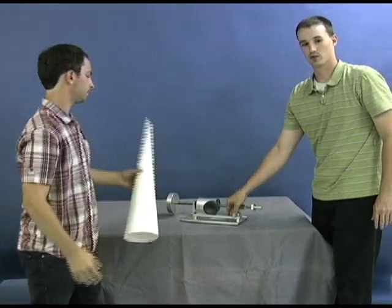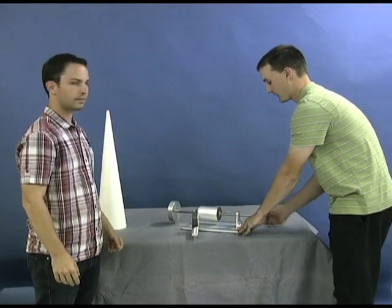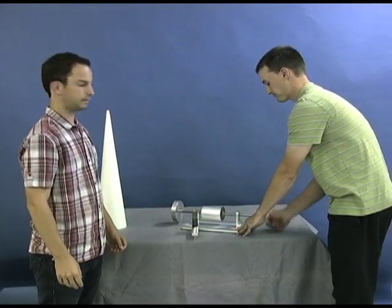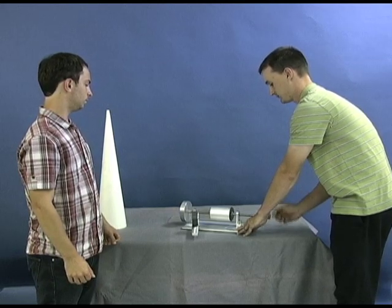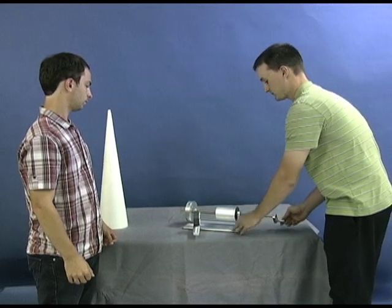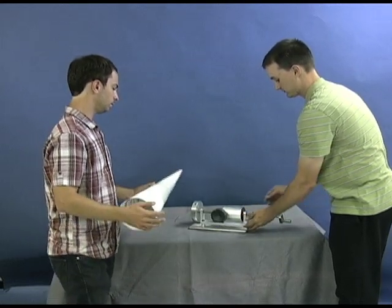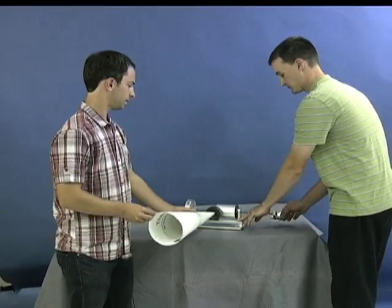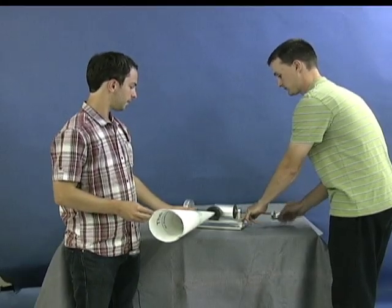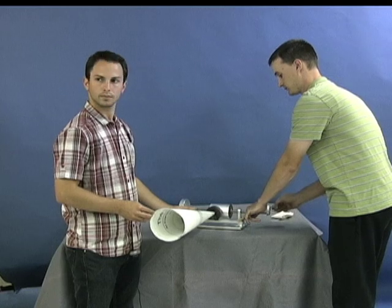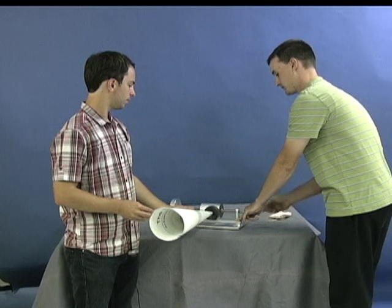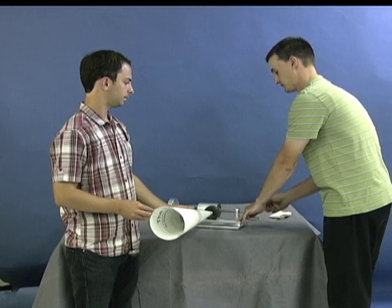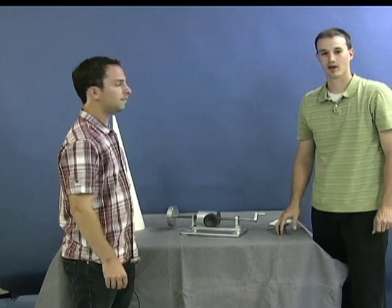Now all we need to do is swing the arm back, rewind the track, and we can play it back. And there you have an Edison homemade tinfoil phonograph.